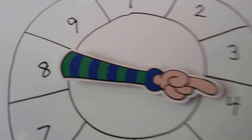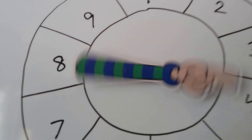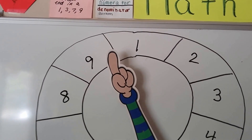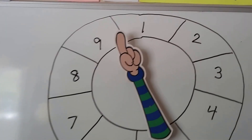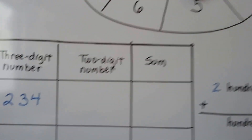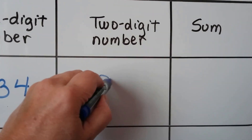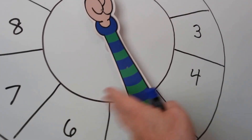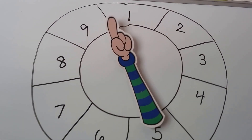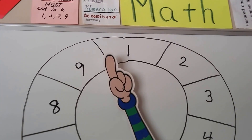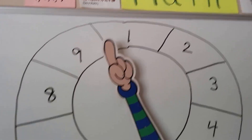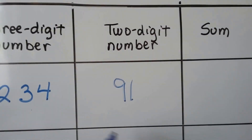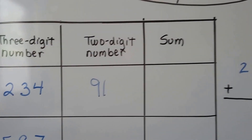So let's spin it the first time to find out what's going to go in the tens place. That looks like it landed just inside the nine, so we're going to add nine tens. Now we need to spin it again to get something for the ones place. Looks like it landed just inside the one, so we're going to add 91. So we need to add 234 plus 91.